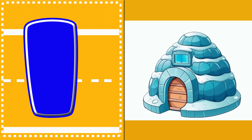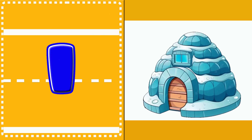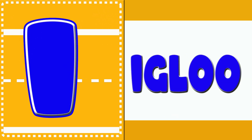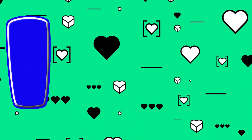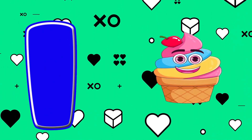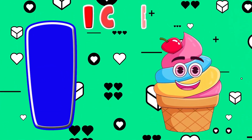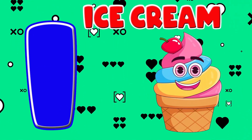I. This is the letter I. I is for igloo — e, igloo. I is for ice cream — i, i.